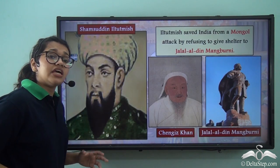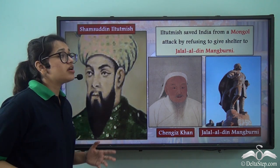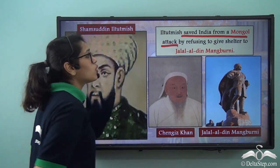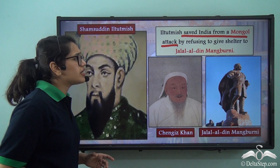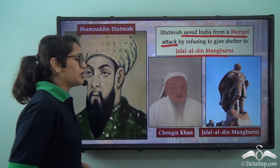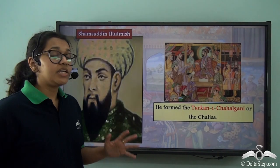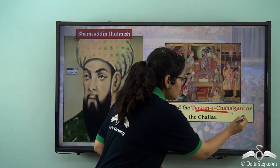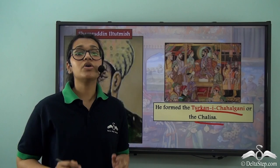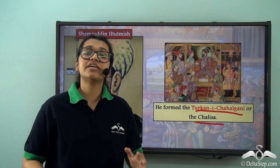Il Tutmish was considered a very wise ruler. He saved India from a possible Mongol attack by refusing to give shelter to Jalaluddin Mangbarni, who was fleeing from Genghis Khan. He also formed the Turkani Chahalgani, or the Chalisa — a group of 40 noblemen who would help him with his administrative duties, forming a new class of nobility.